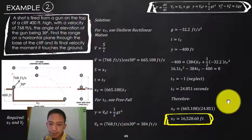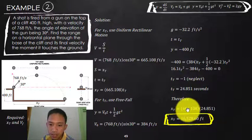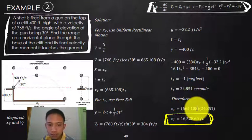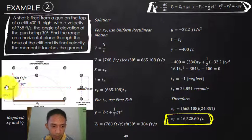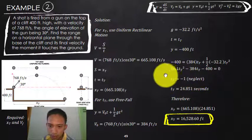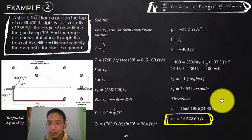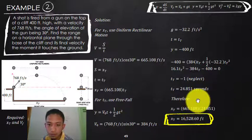Substituting t_t = 24.851 s into the horizontal equation: x_t = 665.108 × 24.851 = 16,528.60 feet. That is the range — the horizontal distance from the base of the cliff to where the bullet lands.